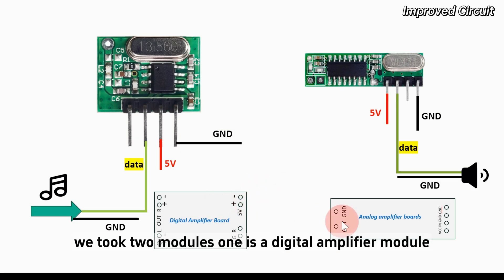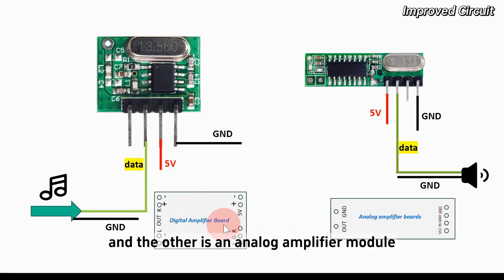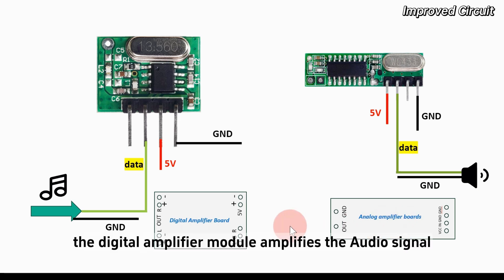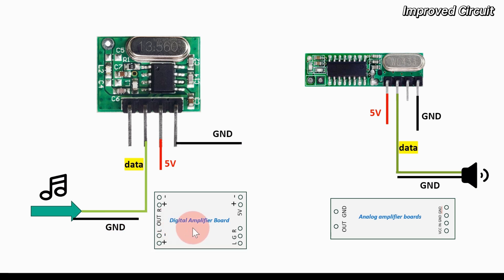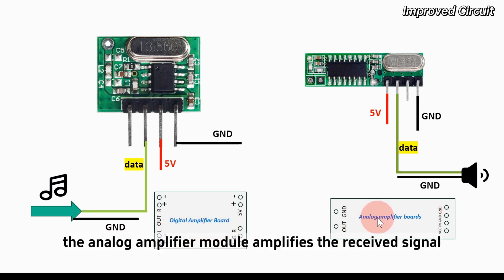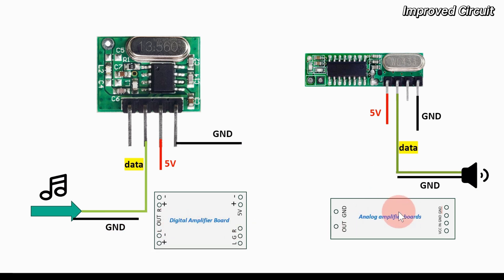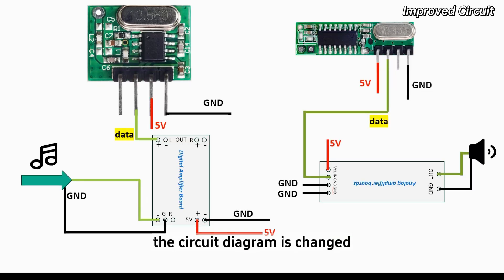We took two modules: one is a digital amplifier module and the other is an analog amplifier module. The digital amplifier module amplifies the audio signal, and the analog amplifier module amplifies the received signal. The circuit diagram is changed accordingly.